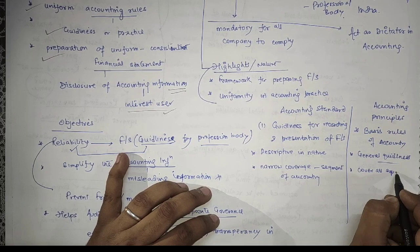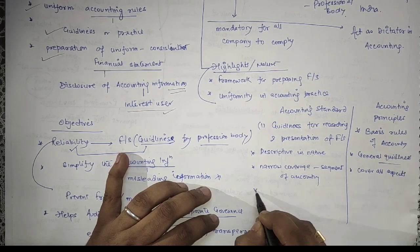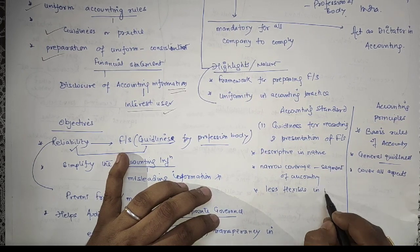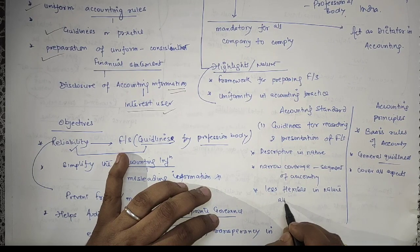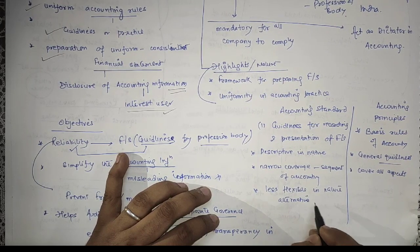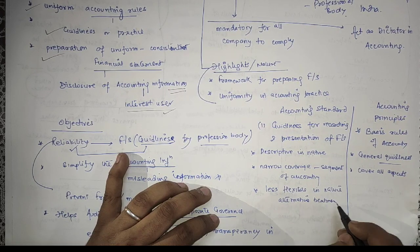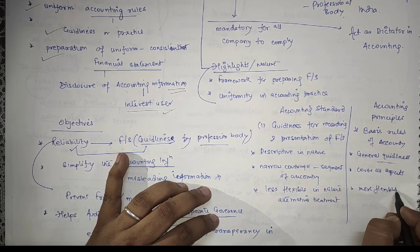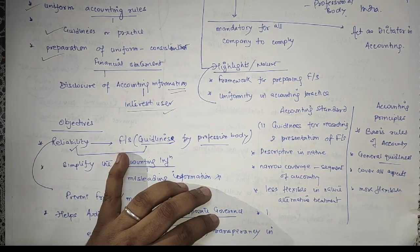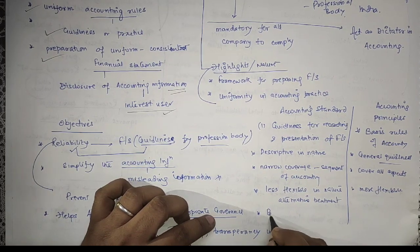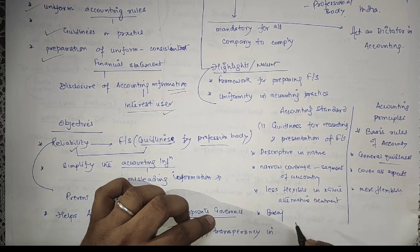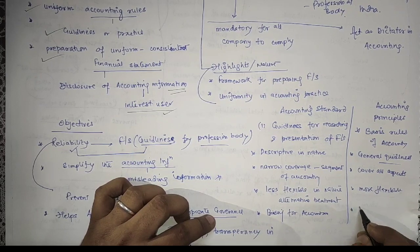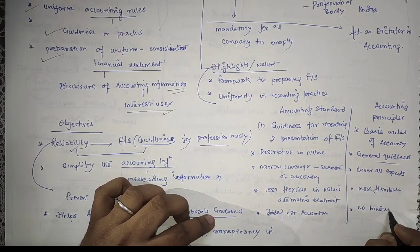Accounting standards are less flexible in nature because there is always an alternative treatment available. Accounting principles, on the other hand, are more flexible in nature. Accounting standards provide binding for accountants, but accounting principles have no binding for accountants.